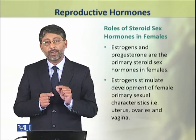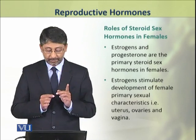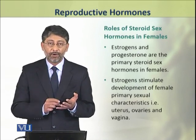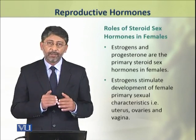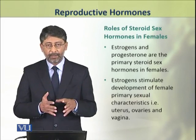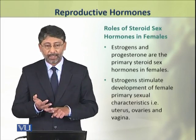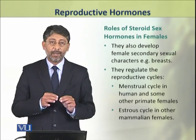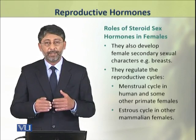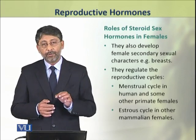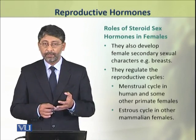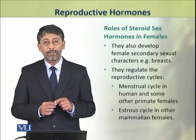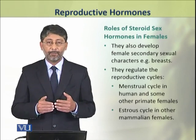Now we shall discuss the role of steroid sex hormones in females. Estrogens and progesterone are the primary steroid sex hormones in females. They stimulate the development of female primary sexual characters, for example uterus, ovaries and vagina. These hormones also develop the secondary female sexual characters, for example the development of breasts. These hormones also regulate the reproductive cycles — the menstrual cycle in humans and some other primate females, and the estrous cycle in all other mammalian females.